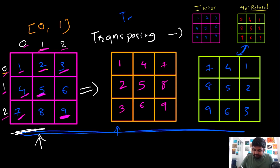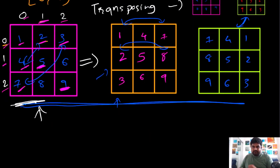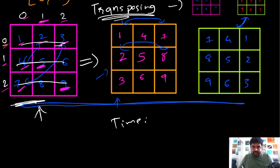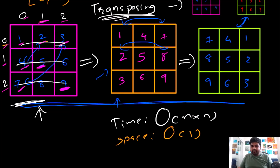All we will have to do is use a temporary variable to first swap the elements during the transpose step, and then once that is done, reverse the rows. For the time complexity, we will have to iterate over all elements to create the transpose matrix, and then reverse all elements — so the time complexity is O(N×N). We do it two times, so O(2·N²), but we can simplify to O(N²). For space complexity, as mentioned, we are not using any additional space — it is O(1). Any interviewer would be really impressed with this approach, and it works for all N×N matrices.